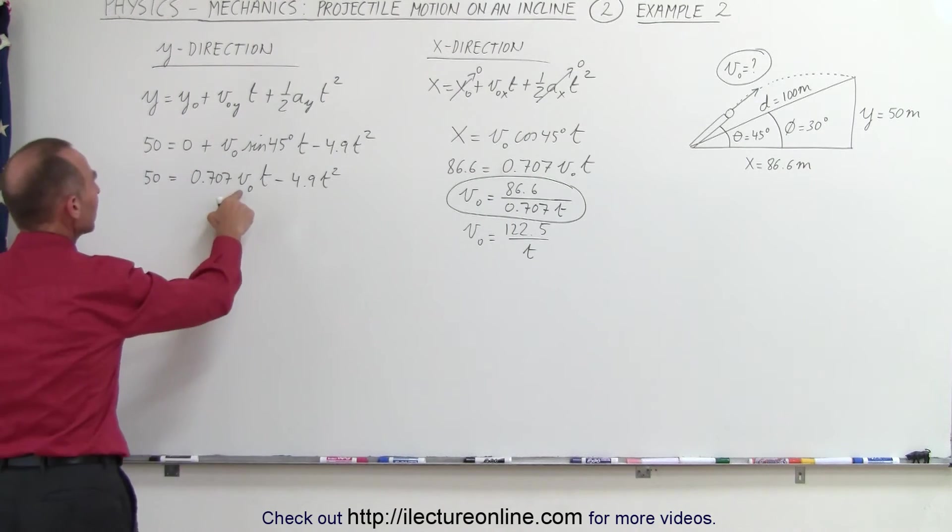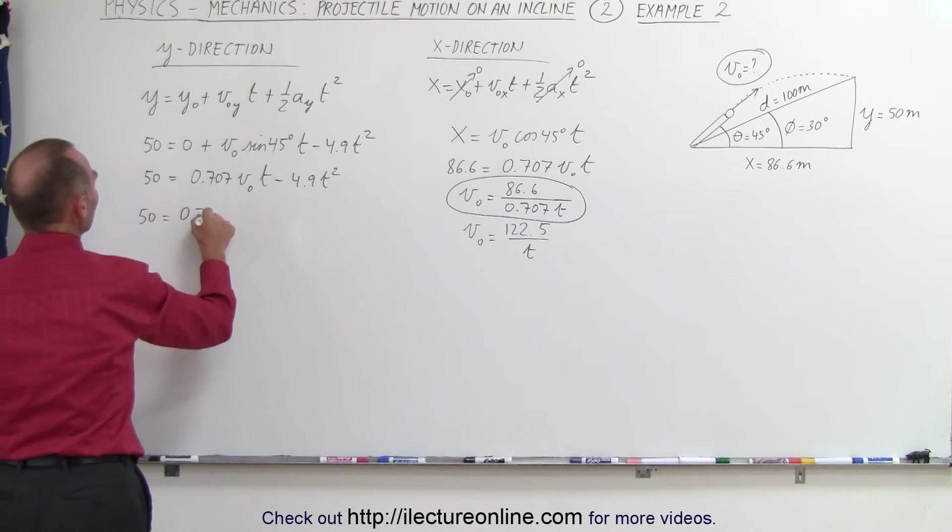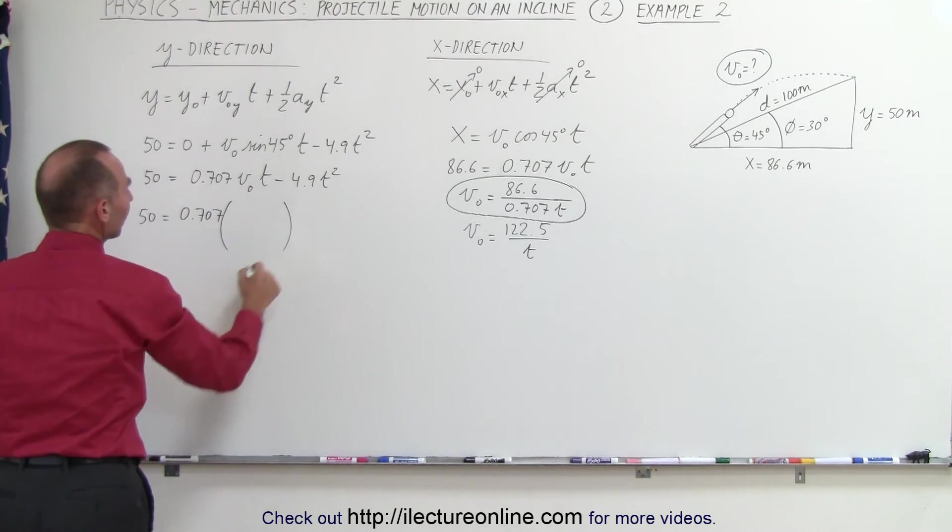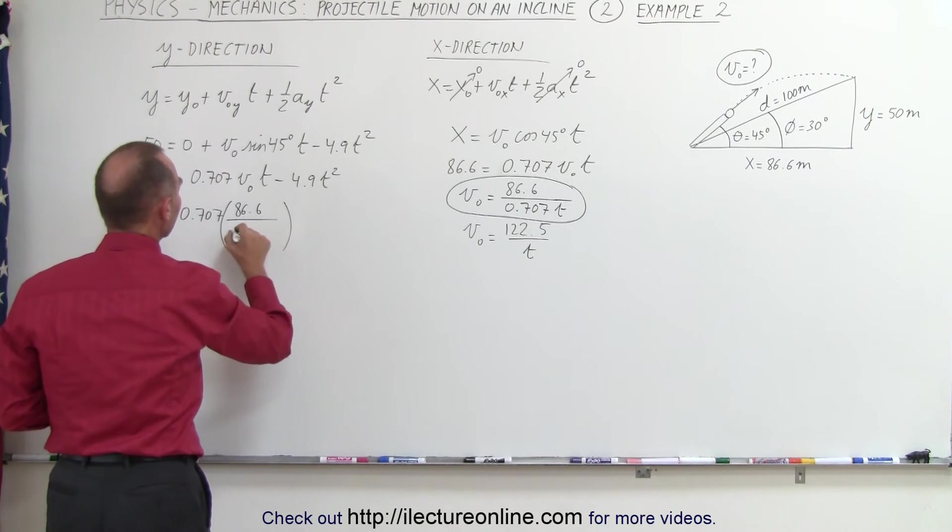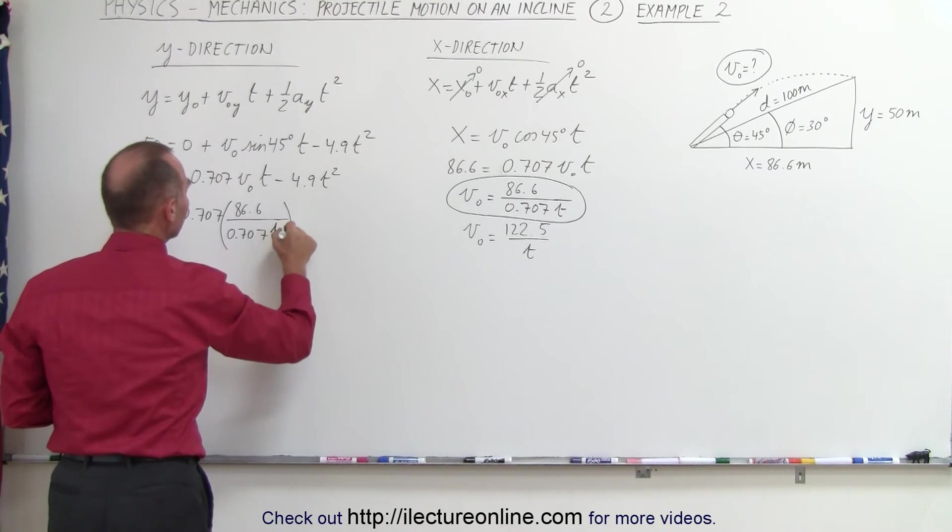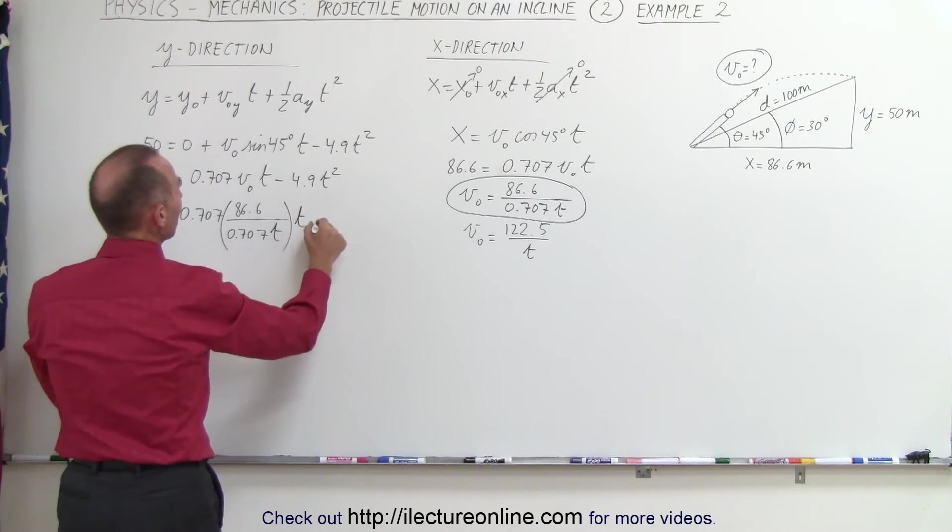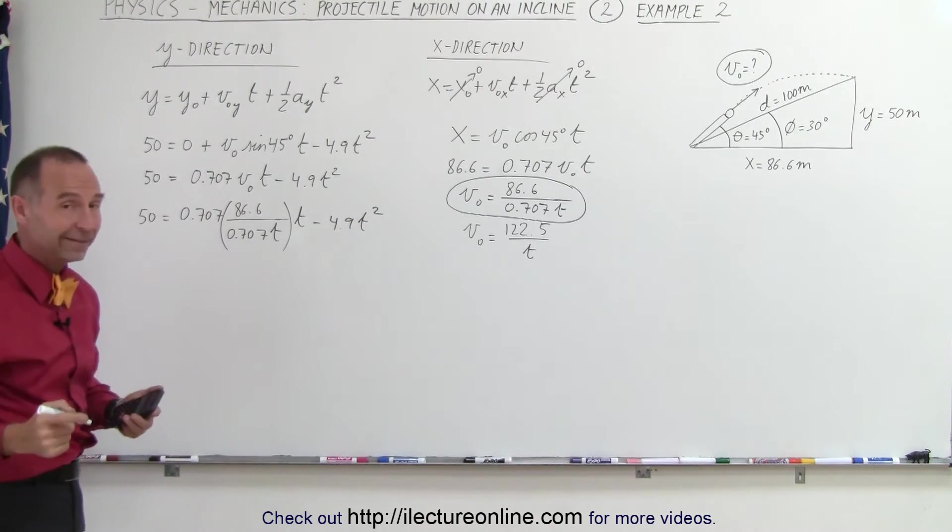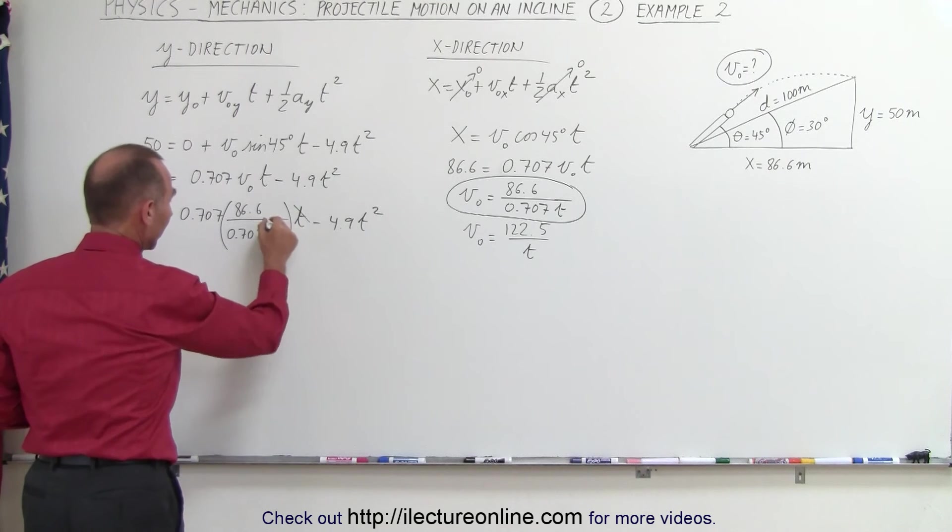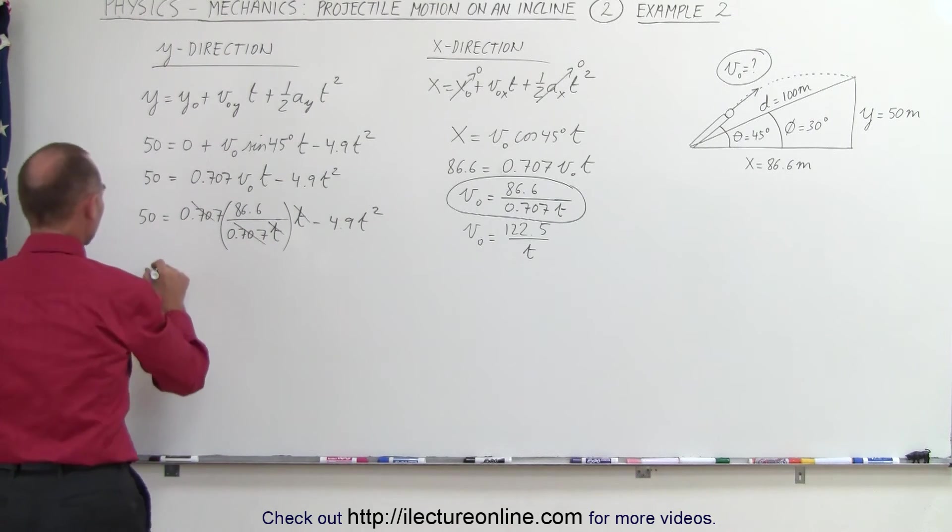Plug that in and we get 50 equals 0.707 times v sub not, which is 86.6 divided by 0.707 times t, minus 4.9 t squared. Notice that the t's cancel out, the 0.707 cancels out, and it makes for a much cleaner equation.